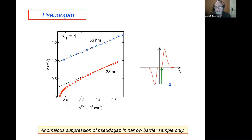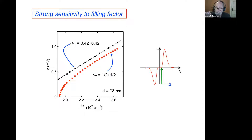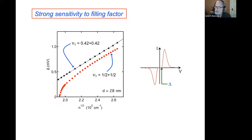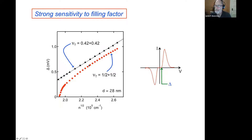The suppression is only seen when the layers are close together — not some anomaly unrelated to exciton condensation. Moreover, if I keep the narrow spacing sample but shift the filling factor away from ν=1 to ν=0.42+0.42 — I picked that deliberately to stay between the two-fifths and three-sevenths fractional quantum Hall states — the same sample that shows nonlinear behavior at total filling factor one shows linear behavior at total filling factor 0.84. This tells you it's very filling-factor-dependent.